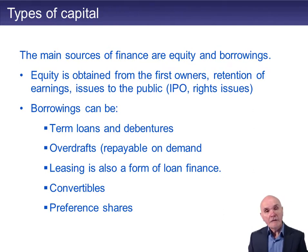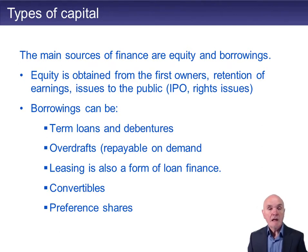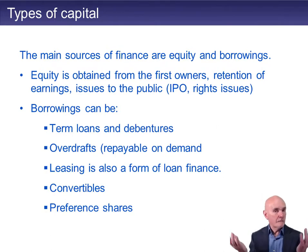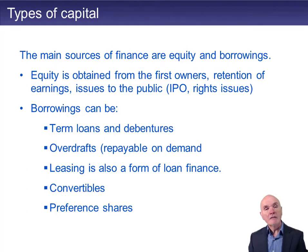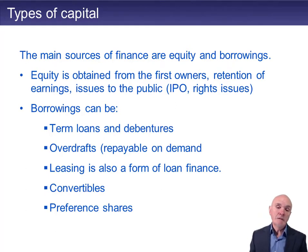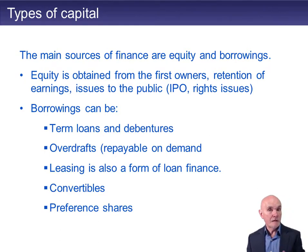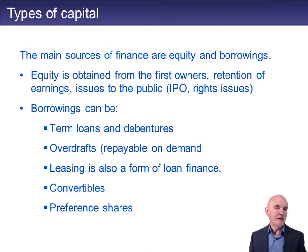Borrowings from banks or institutions, or indeed individuals, are much safer. People have to pay the interest, or else the whole company comes tumbling down, and very often the borrowings are secured. You can have term loans or debentures. A term loan is like a five-year loan, a three-year loan, a ten-year loan. A debenture is, in a way, just another name for that.